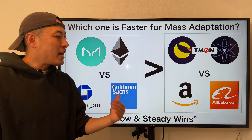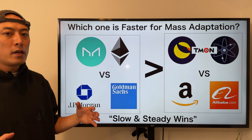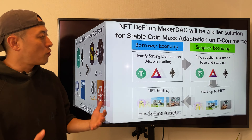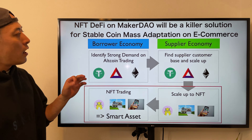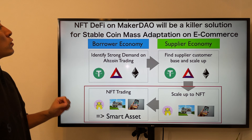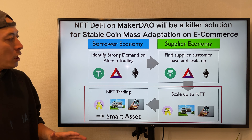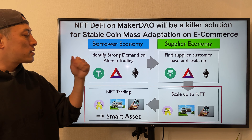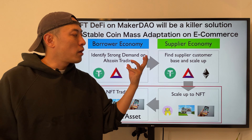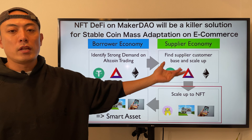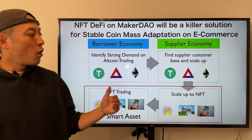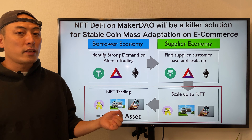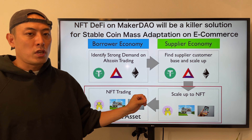Every startup should avoid direct competition against tech giants — instead, always take the slow-and-steady wins approach, meaning the indirect competition model. Mass adoption from the DeFi space for stable coins consistently is much more strategically sound. Here is my clear future scenario for stable coin mass adoption: NFT DeFi or MakerDAO DAI would be a killer solution for stable coin mass adoption on e-commerce. The collateralized DeFi market for stable coins like MakerDAO is starting from major crypto assets such as BAT or ETH tokens, developing on DeFi platforms like Aave, Uniswap liquidity mining, or lending.